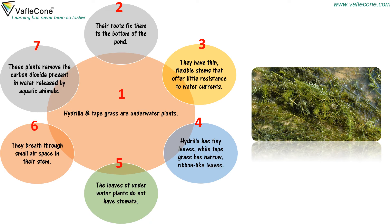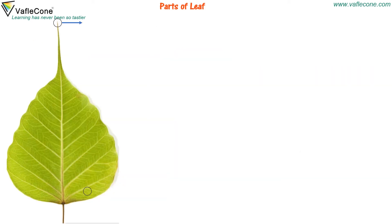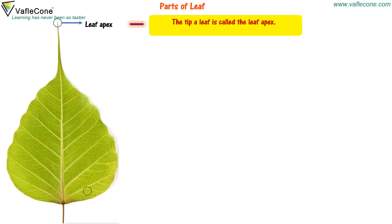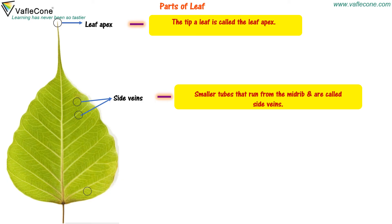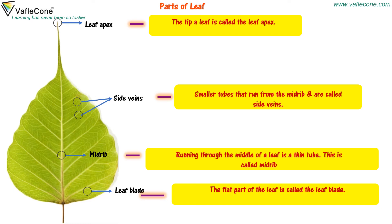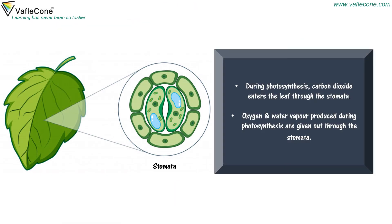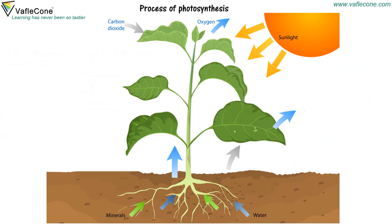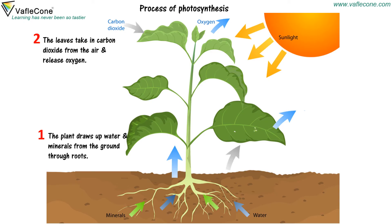Underwater plants also remove the carbon dioxide present in water released by aquatic animals. Parts of a leaf: the tip of a leaf is called the leaf apex. Smaller tubes that run from the midrib are called side veins. Running through the middle of a leaf is a thin tube called the midrib. The flat part of the leaf is called the leaf blade. During photosynthesis, carbon dioxide enters the leaf through the stomata, and oxygen and water vapour are given out through the stomata. The plant draws water and minerals from the ground through roots. Sunlight gives chloroplasts energy to make sugar.